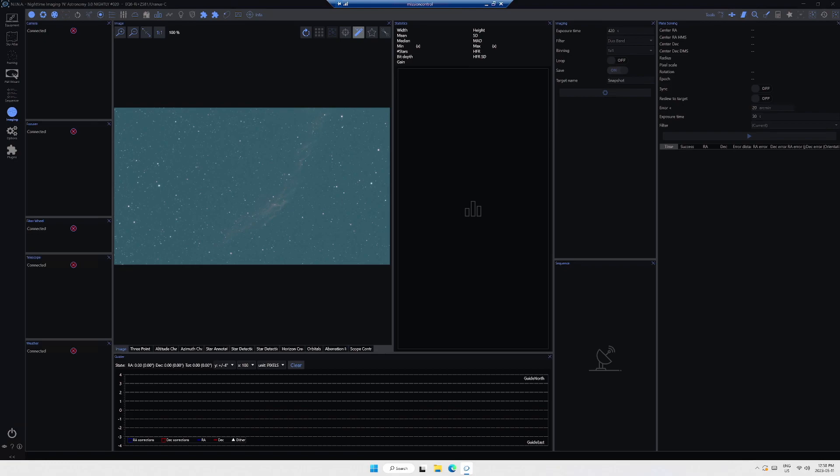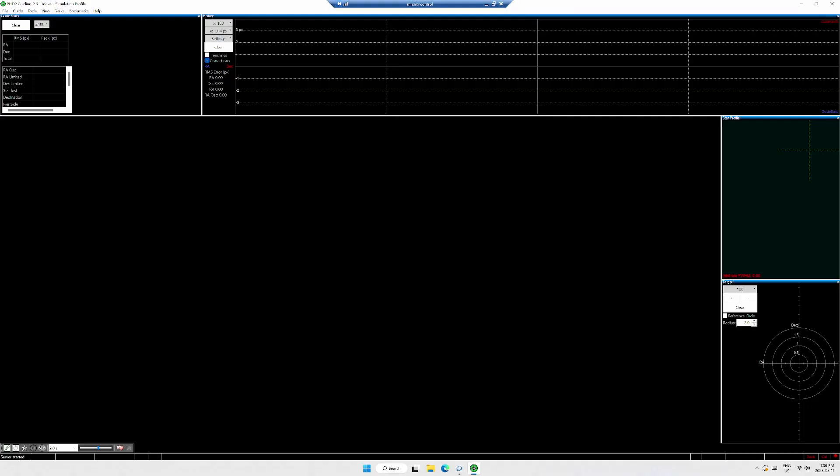Once we are pointed at our object, we need to get guiding going. A mount on its own will do its best to turn with the rotation of the Earth, pointing the telescope at an object with a great degree of accuracy, but to shoot deep sky objects which are very dim, you might have to keep your camera activated or the shutter open, even though astro cameras don't actually use shutters, it's an electronic shutter, for 3, 5, 10, 20, 30, 60 minutes or more, whereas unguided a mount is typically good for 2-3 minute exposures.